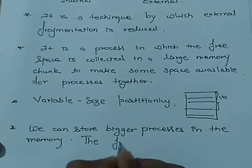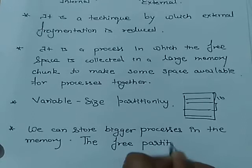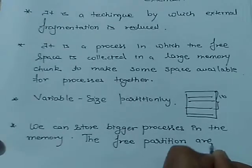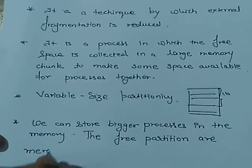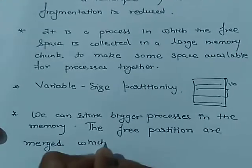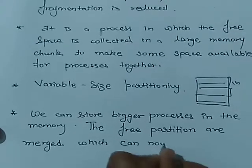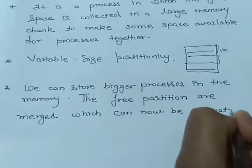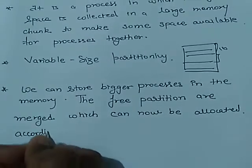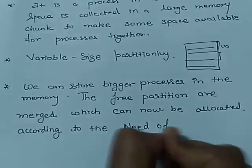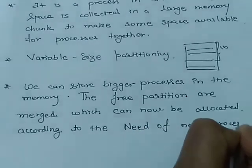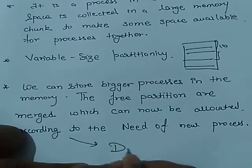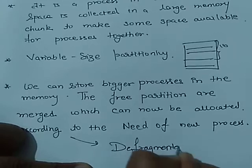The free partitions are merged which can now be allocated according to the need of new processes. This is also known as defragmentation. Now let us discuss the whole process of compaction with the help of a diagram.